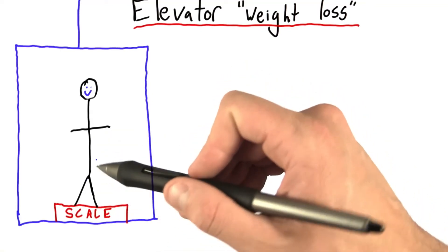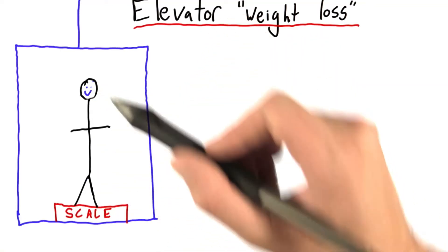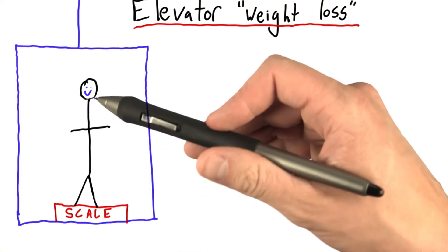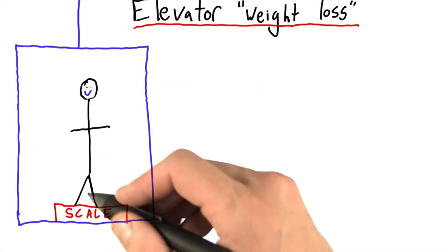Here's a man in an elevator. This man wants to lose weight, and he is very happy because he thinks he's found a pretty clever way to lose this weight. This man is standing on a scale.